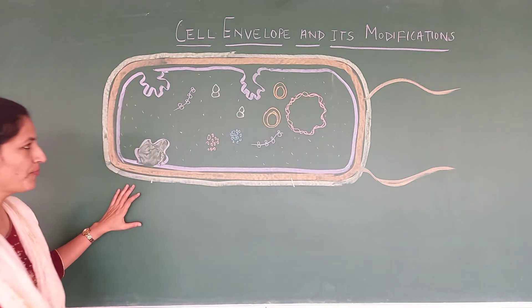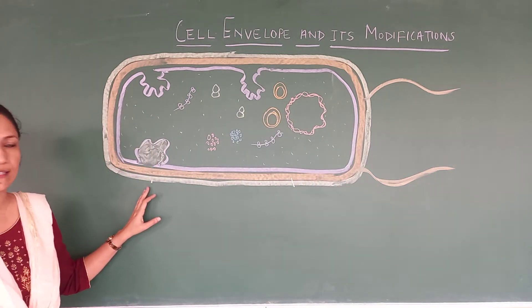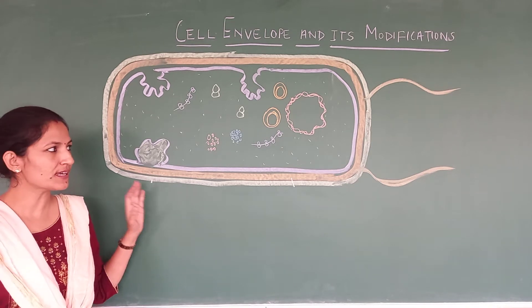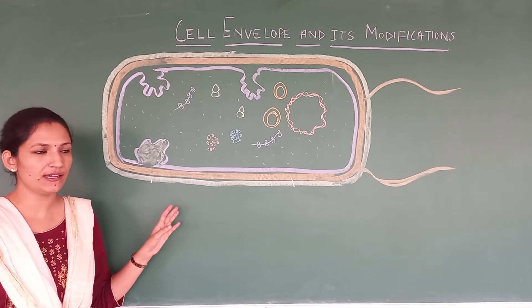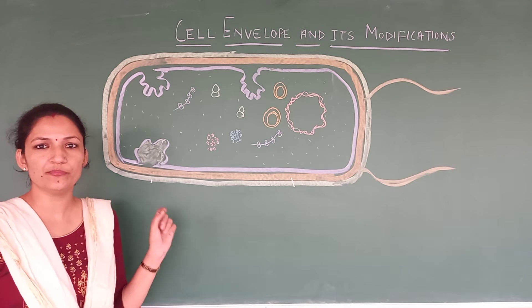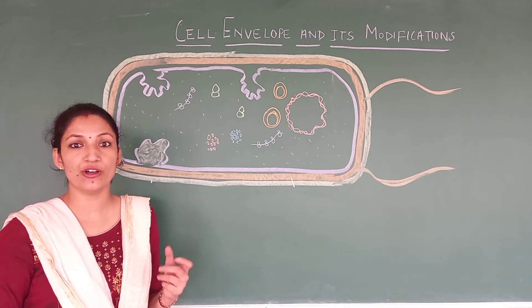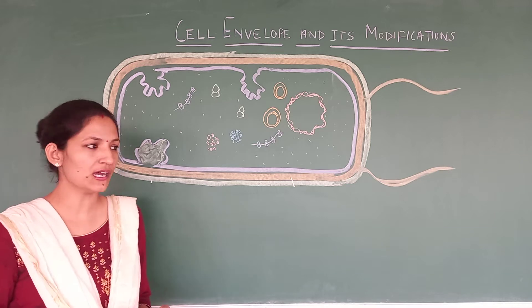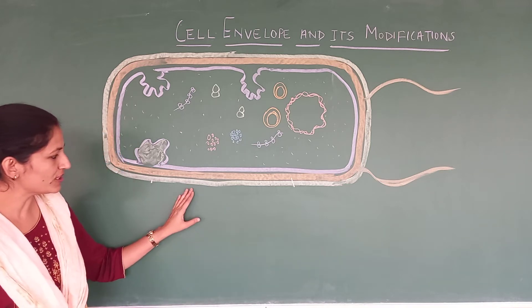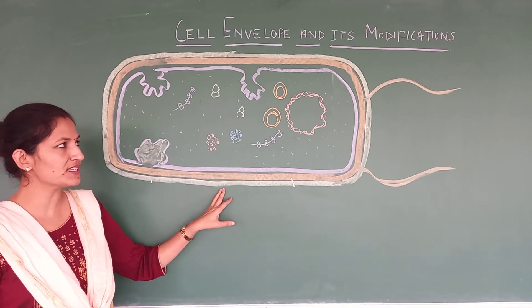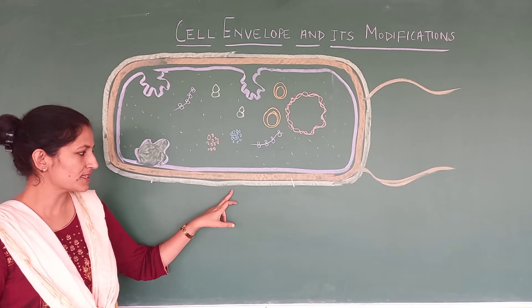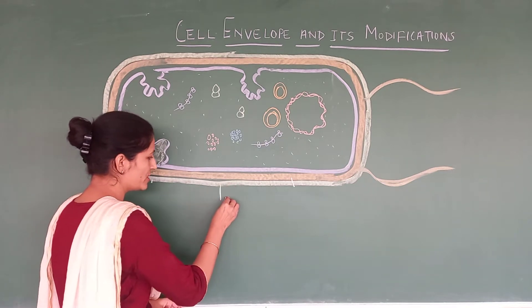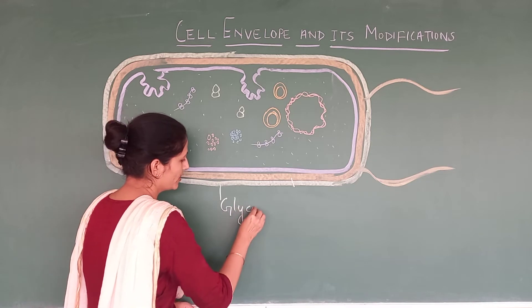You can see the diagram of the prokaryotic cell or bacterial cell over here. Let's start labelling and we will see how the plasma membrane is going to modify to perform various functions. The outermost covering of this bacterial cell is the glycocalyx.